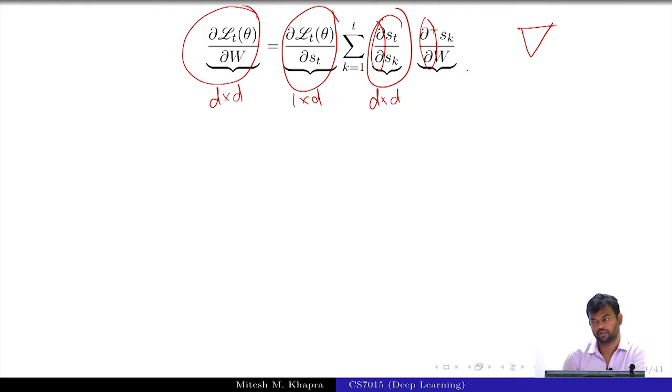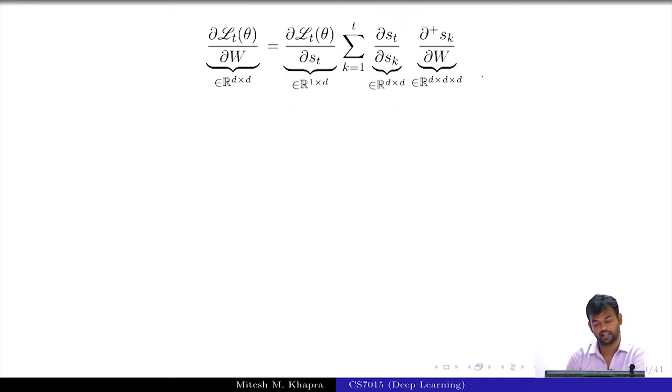D cross D. And this? It is very straightforward, right. What is the dimension of the numerator? What is the dimension of the denominator? That's all right. So you see the kind of multiplication that you're doing here. You have D cross D, 1 cross D, D cross D, and then D cross D cross D.